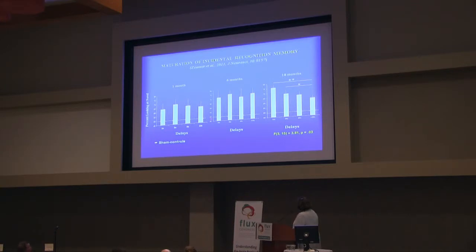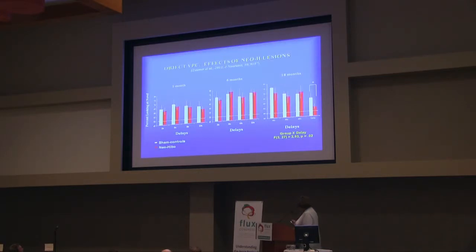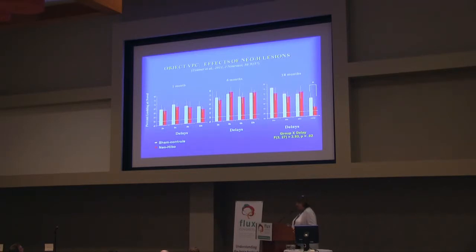This was interesting because many papers in the literature at the time suggested that this type of memory, which can also be demonstrated in human infants very early in life, may be dependent on the hippocampus — since the hippocampus was thought to be fully developed at birth in primates. To test this, we looked at what animals with hippocampal lesions would do on this task. Animals with neonatal hippocampal lesions performed comparably to controls for the first month and at six months, but by 18 months they showed exactly the same pattern as if the lesion had been done in an adult — performing well at short delays but declining at the longest delay.